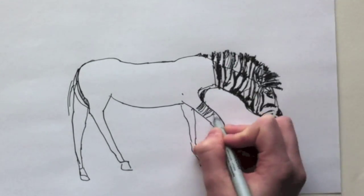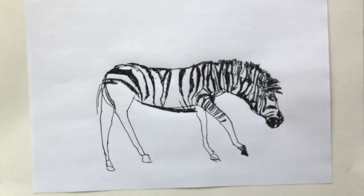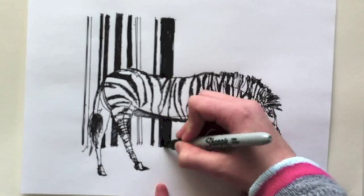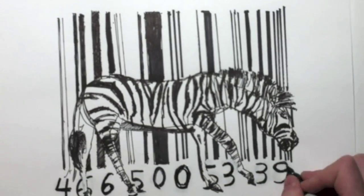The zebra felt like its stripes were the first thing anyone ever noticed. The zebra began to feel like its stripes were the only identity it held.